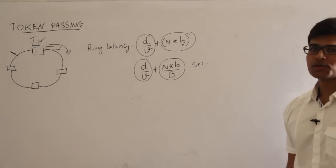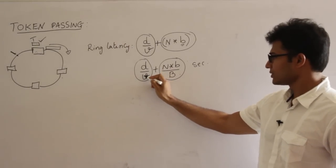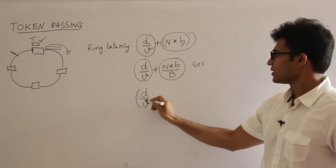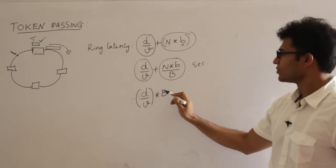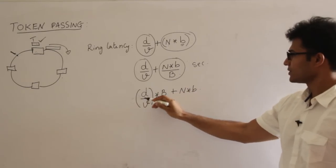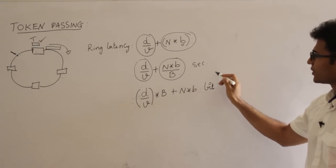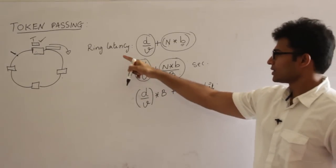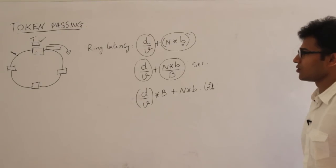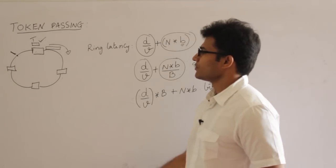To convert the entire ring latency into bits: multiply D/V by bandwidth to get bits, then add N×B which is already in bits. So ring latency in bits = (D/V)×bandwidth + N×B. You can express ring latency either entirely in seconds or entirely in bits.